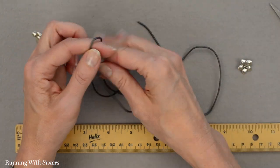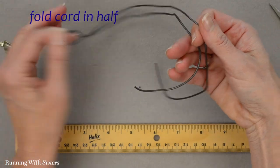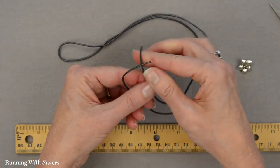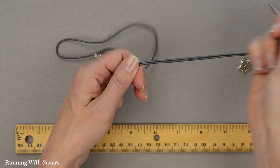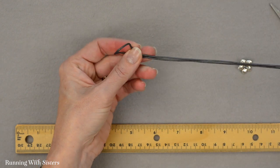The first thing you want to do is fold your cord in half. The easiest way to do that is to line up your ends like that, and then your cord is perfectly folded in half.